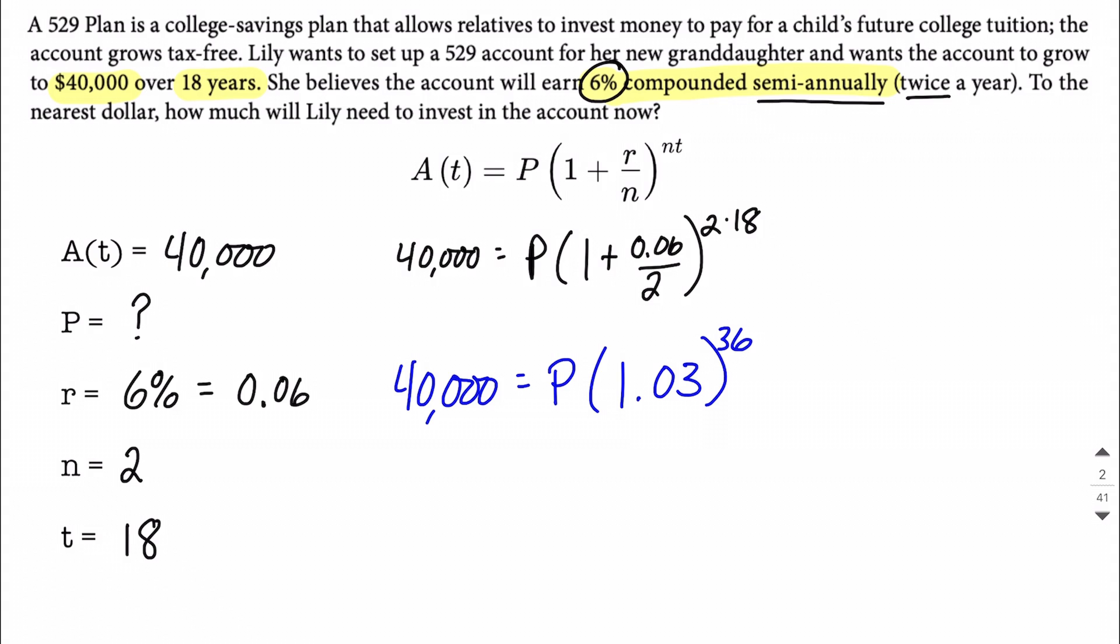But notice, really what we want to do is we want to get P on one side all by itself. Well, P is connected to the set of parentheses and the exponent with a multiplication. So really, all that we need to do to get P on one side by itself is counteract that multiplication by using division on both sides. And hopefully at this point, we're pretty comfortable with our calculators that we should be able to get this all in our calculator at once without doing decimal approximations along the way.